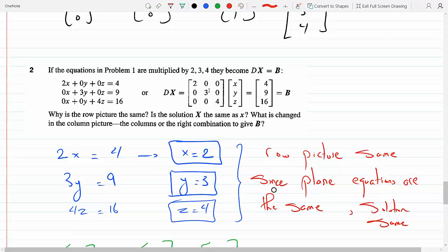And three times the middle column vector and four times the third column vector, does this give you the right combination? Do these answers in problem number one get squared? Yes, that's what it means. It means the right combination gives B.